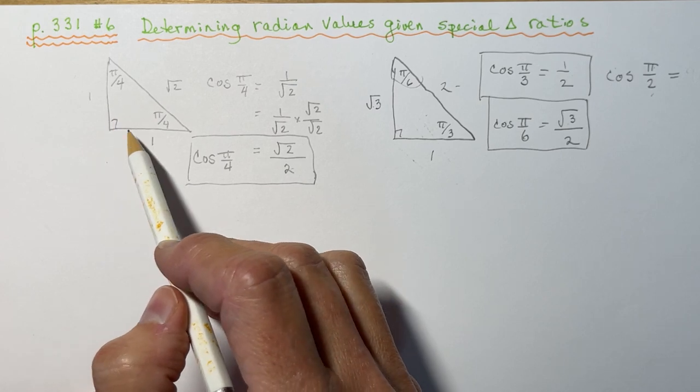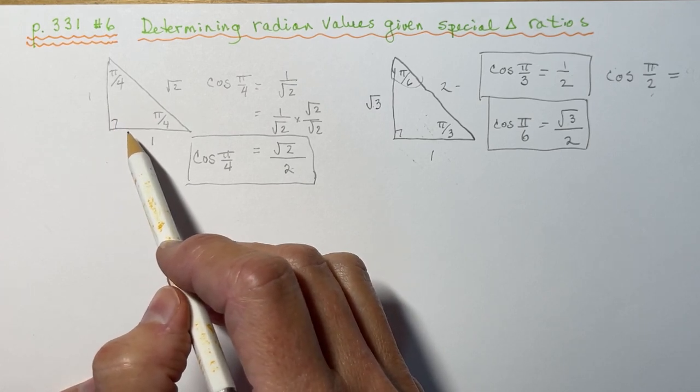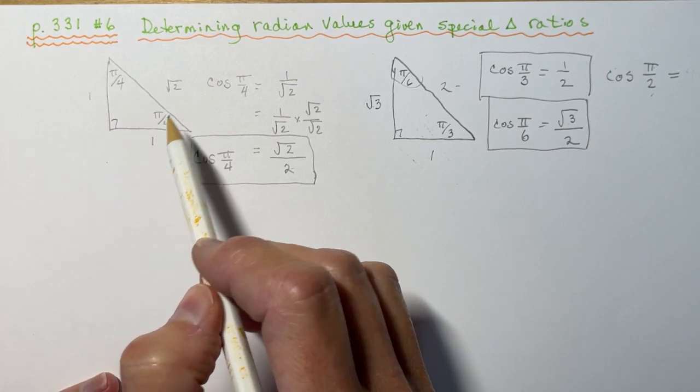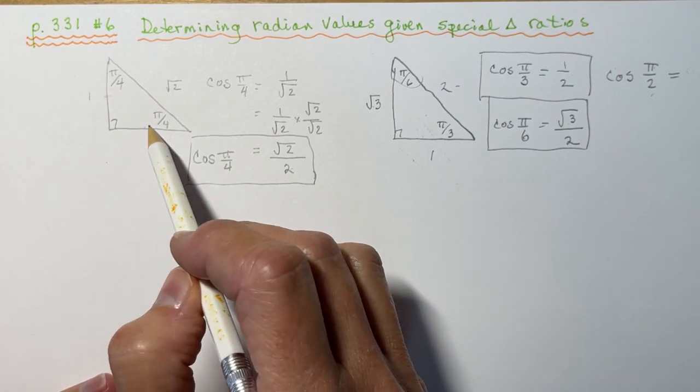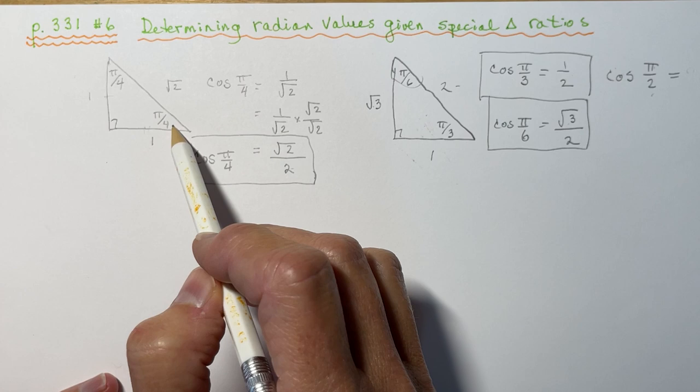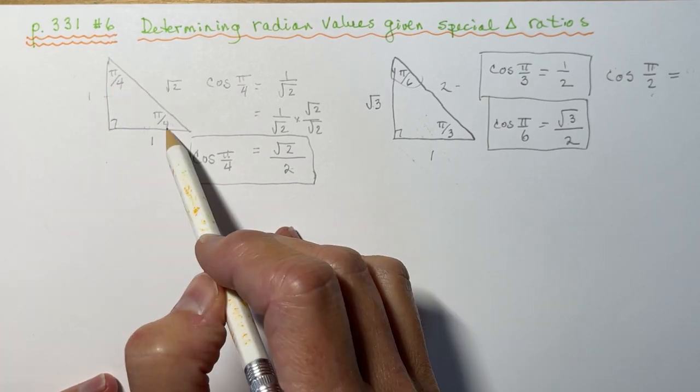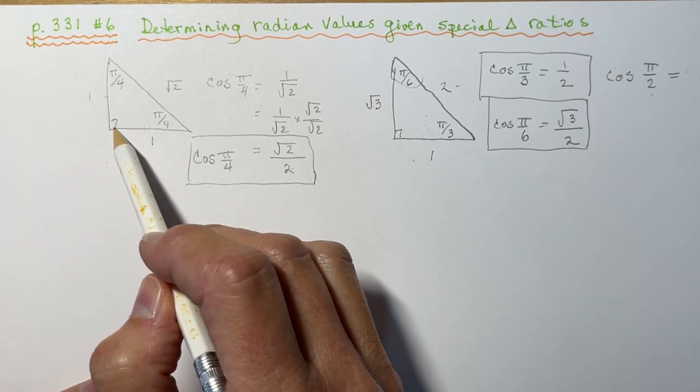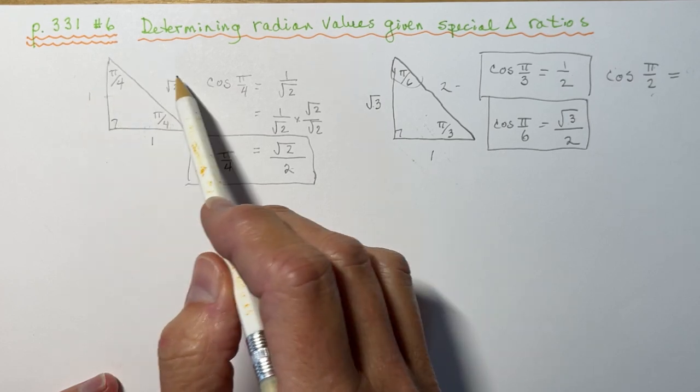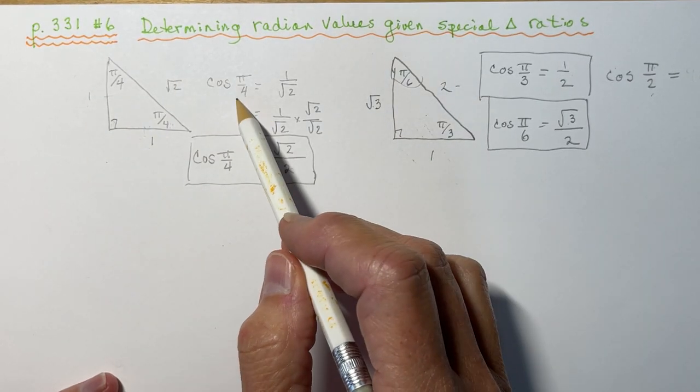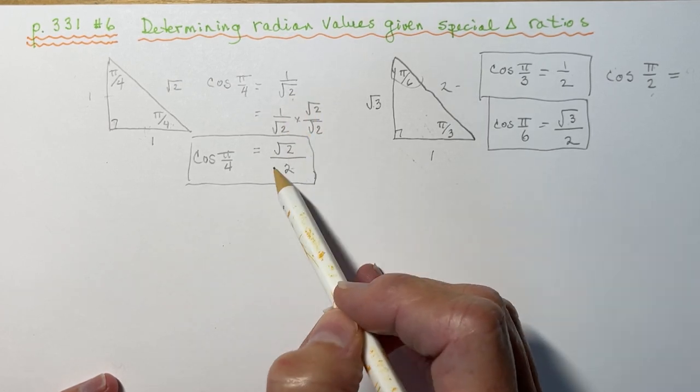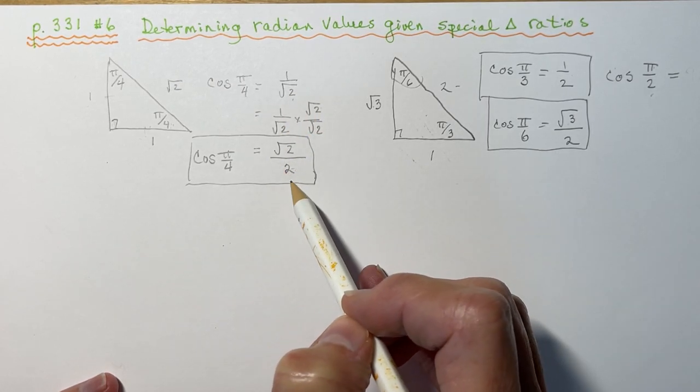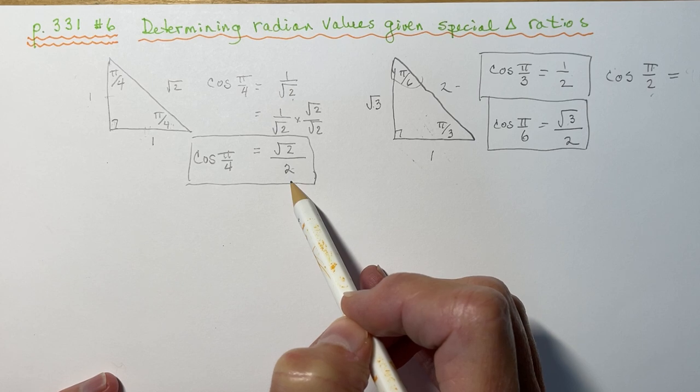I never encourage my students to memorize them, but rather to understand how to write them. This is a two sides equal triangle. That means that the angles here are the same, so they're 45 degrees. If this is 90 you get your 1, 1, square root 2. And the cos of pi over 4 is 1 over root 2. Rationalizing the denominator gives you root 2 over 2, which you'll see in your question for letter C of number 6.